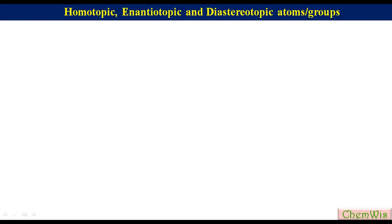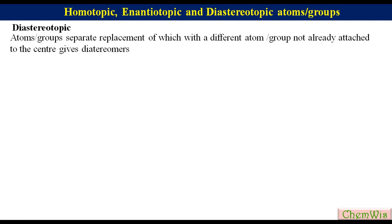Diastereotopic atoms or groups: Two atoms or groups are said to be diastereotopic if their separate replacement with a different atom or group not already attached to the center gives diastereomers. Diastereotopic atoms or groups can be differentiated by NMR because they have different chemical environments.